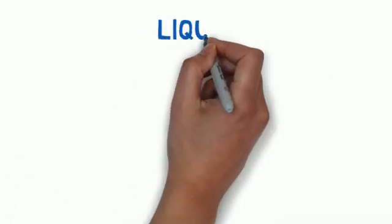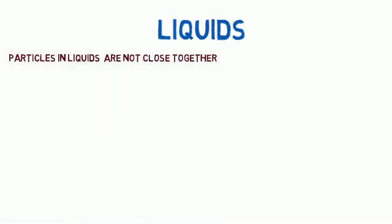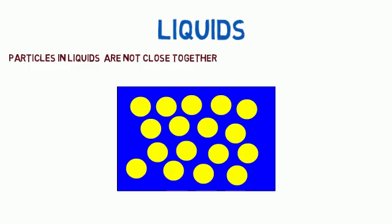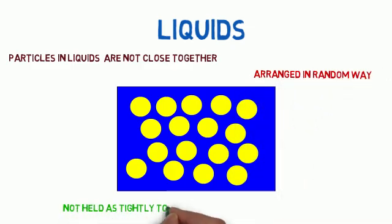The particles in liquids are not as close together as in solids. They are arranged in a random way and they are not held as tightly together as in solids. This enables them to move freely.